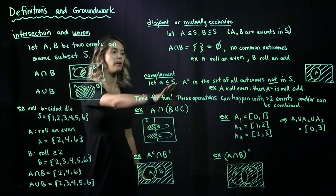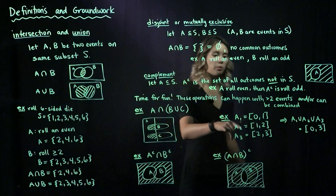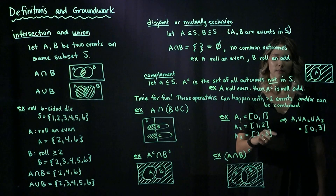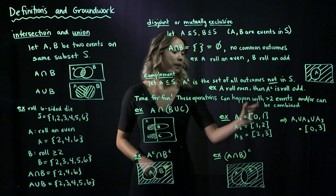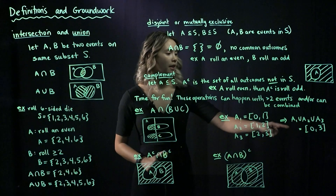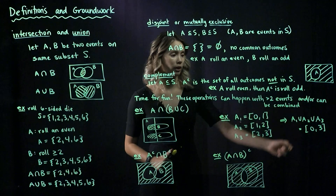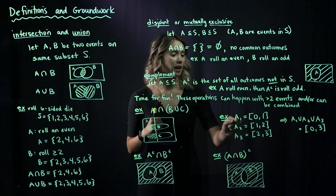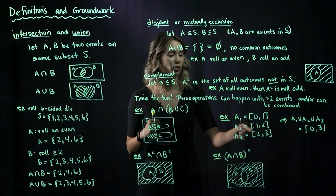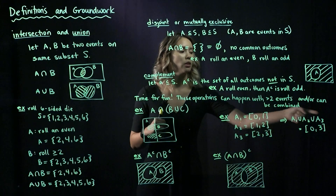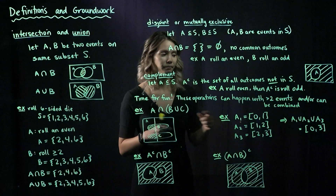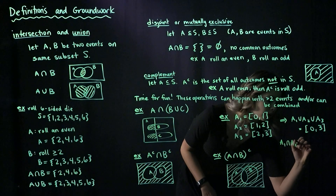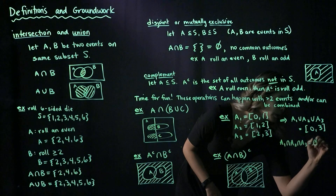For a less visual example, let A1 be the interval [0,1], A2 be [1,2], and A3 be [2,3] — little pieces of the number line. Then A1 union A2 union A3: since A1 covers 0 to 1, A2 covers 1 to 2, and A3 covers 2 to 3, the union is the interval [0,3]. And if we look at the intersection of all three, they have nothing in common, so we're left with the empty set.